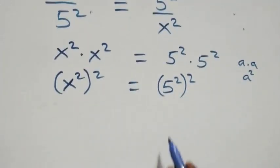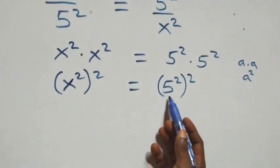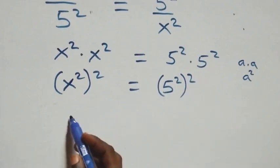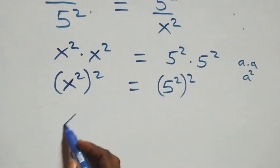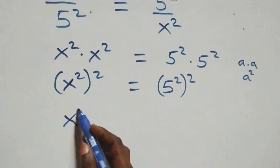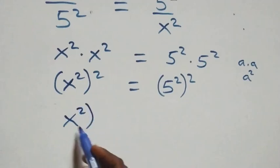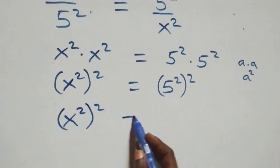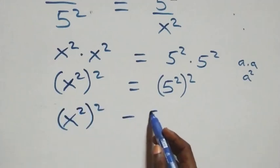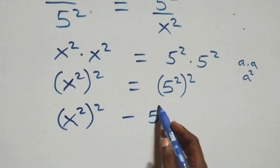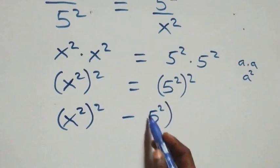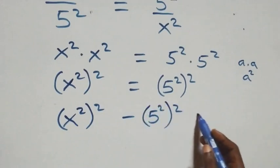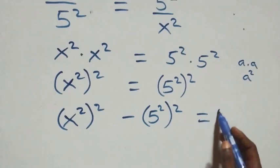Next step here we can take five squared squared to this side, so we have x squared squared minus five squared squared equals zero.